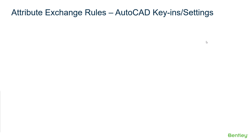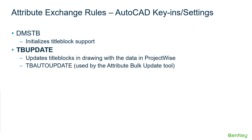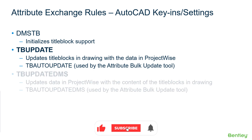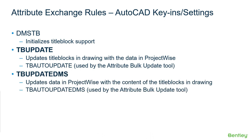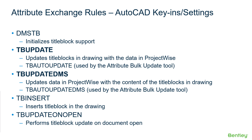After the installation of the ProjectWise integration for AutoCAD, there are a number of key-ins and settings you can use while in AutoCAD. DMSTB initializes the title block support. TB Update updates title blocks in the drawing with the data in ProjectWise. TB AutoUpdate does the same function, however it is used by the AttributeBulkUpdate tool. TB Update DMS updates the data in ProjectWise with the content of the title blocks in the drawing. TB AutoUpdate DMS performs the same function but is used by the AttributeBulkUpdate tool. TB Insert will insert the title block in the drawing. TB Update on Open is a setting instructing AutoCAD to perform the title block update when documents are opened.